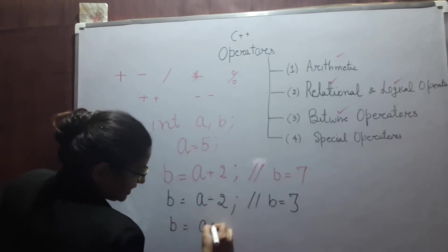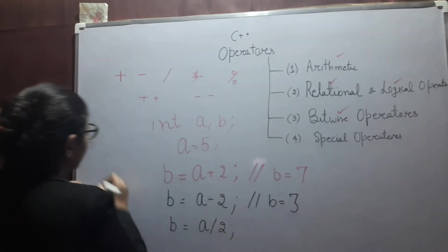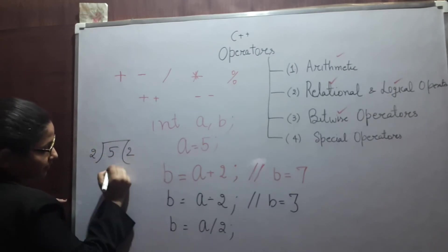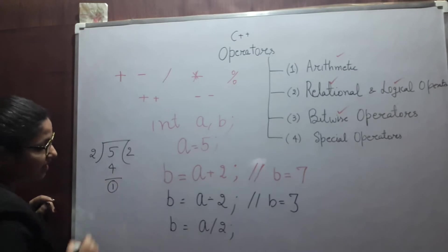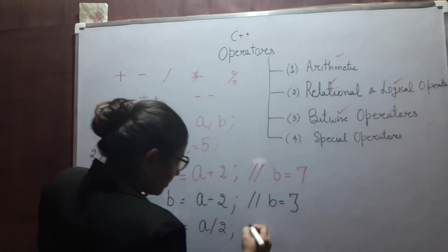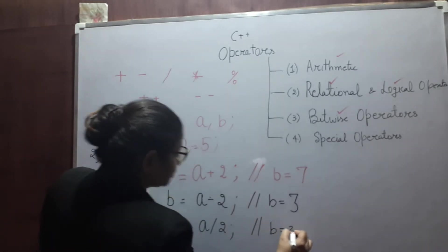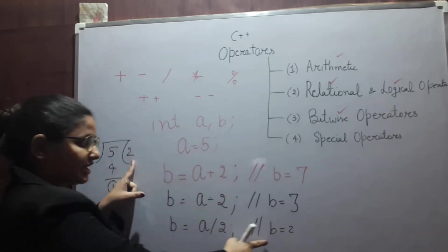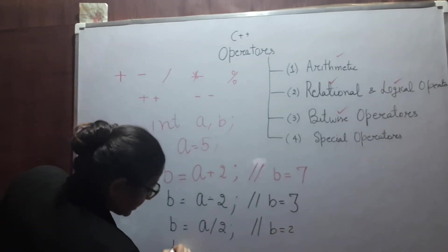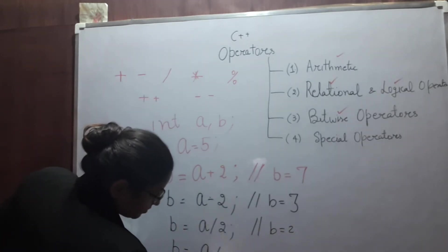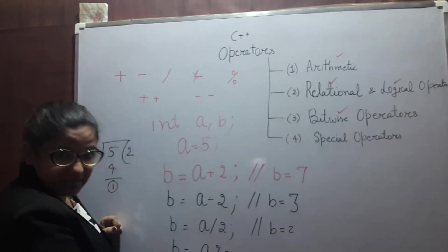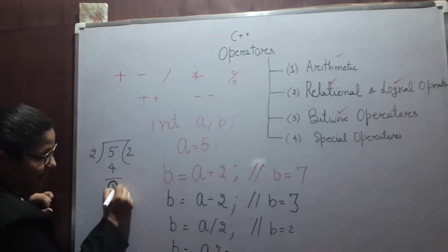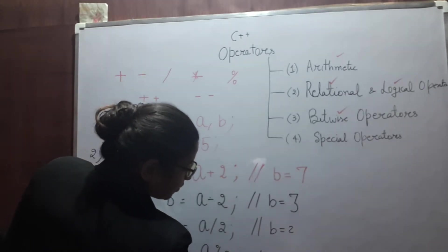For division, B equals A divided by two. Five divided by two gives two with a remainder of one, so B becomes two. In the case of modulus, what we get is the remainder, which is one. So B's value becomes one — modulus gives us the remainder.